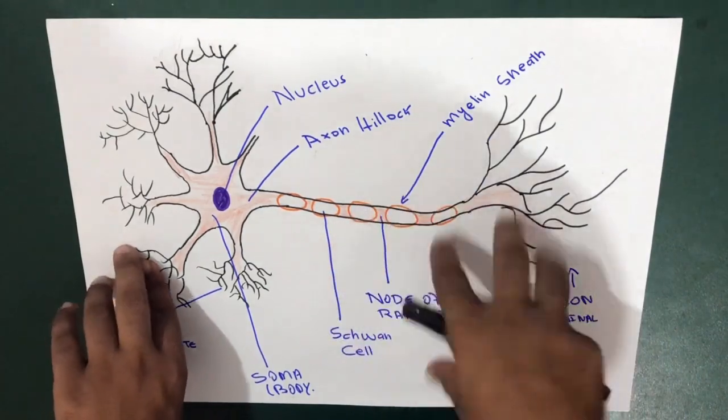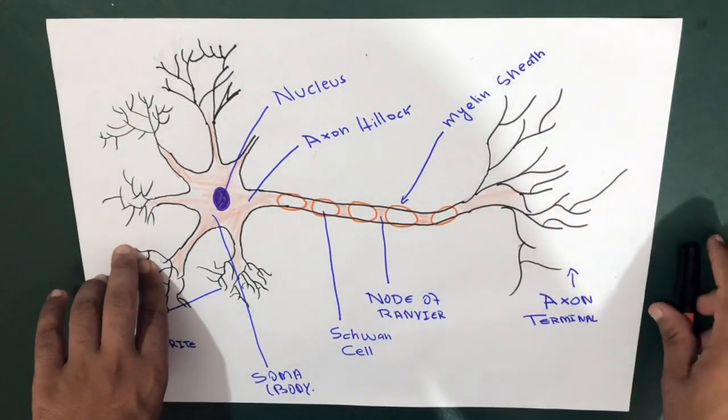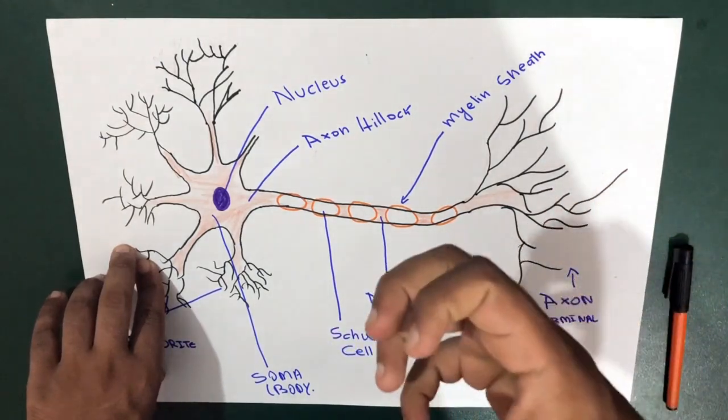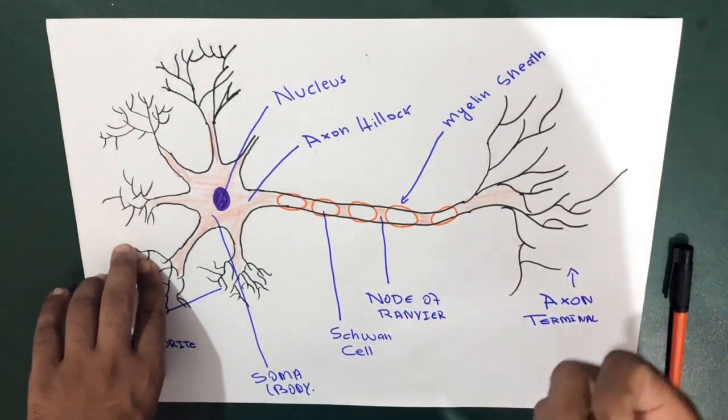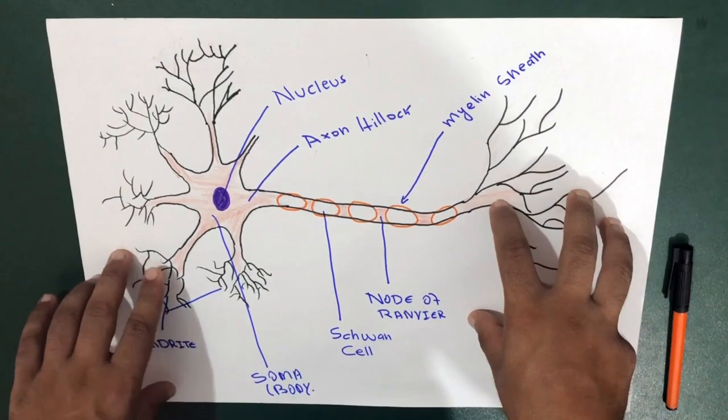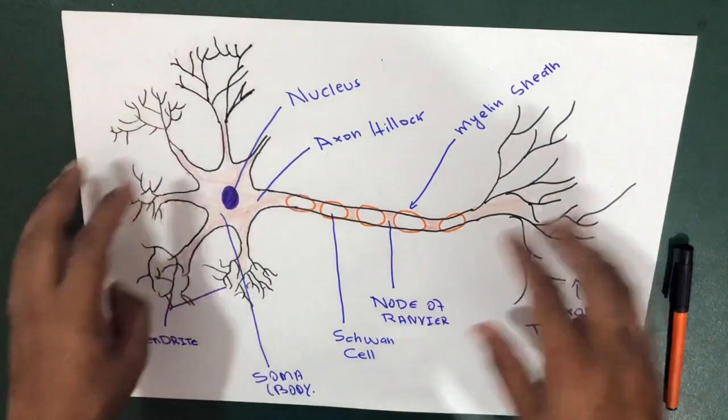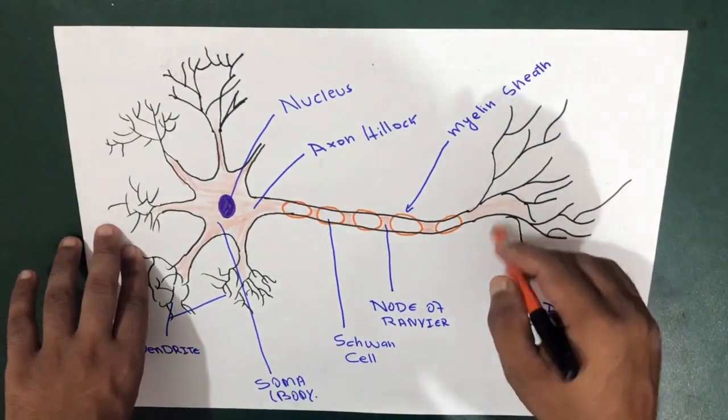So neurons are the nervous system cells which make your whole nervous system, including the cells of the brain, your spinal cord, and all the nerves embedded in your body. That's why you feel sensation because of these neurons.